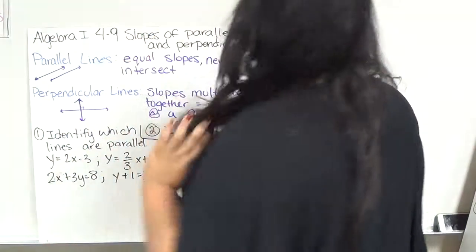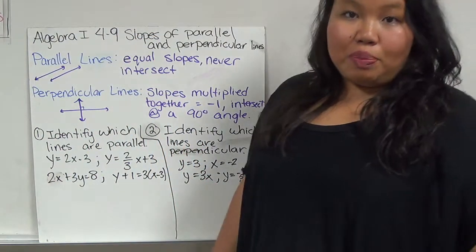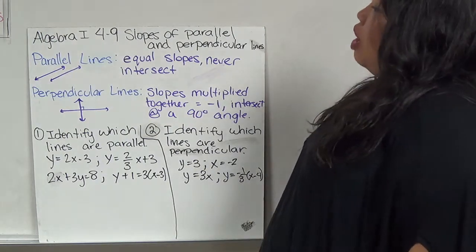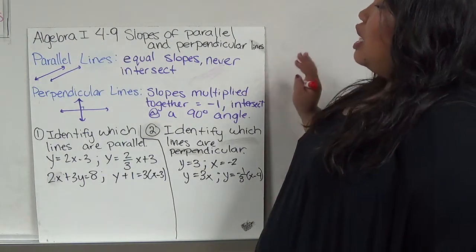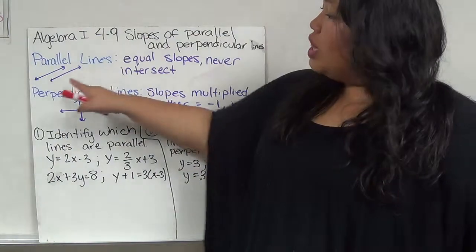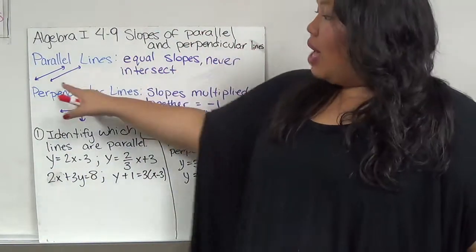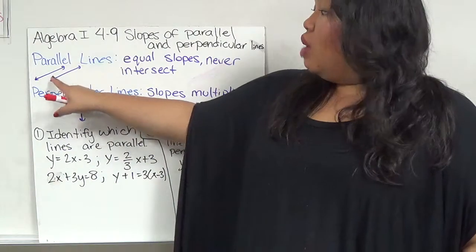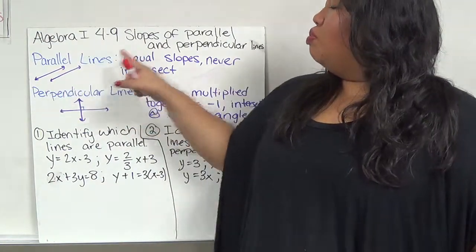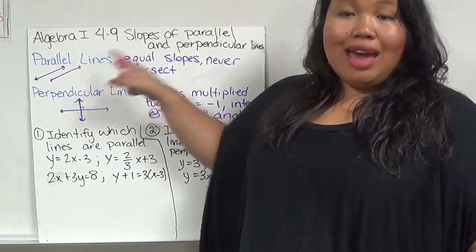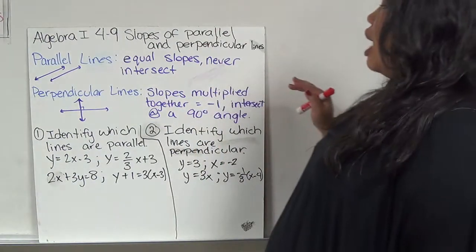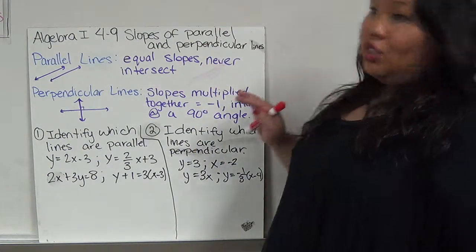In Algebra 1, Section 4-9, we're dealing with slopes of parallel and perpendicular lines. Parallel lines means that the slopes are equal. They're going the same rate up and over at the same time. Because they're going the same rate, they're perfectly parallel and they'll never intersect. So parallel lines are equal slopes and they never intersect.